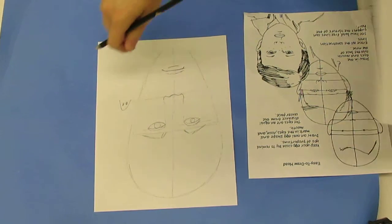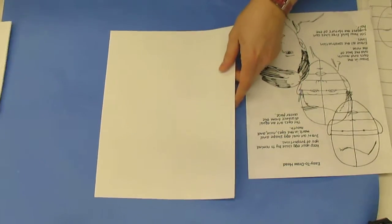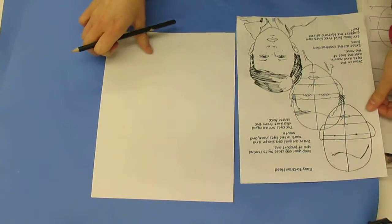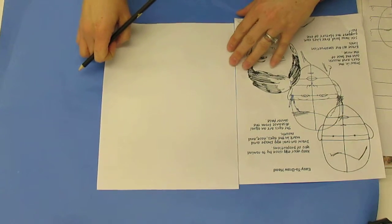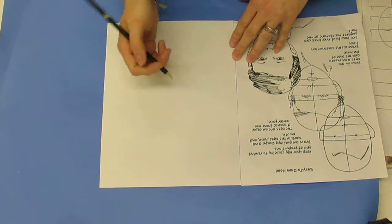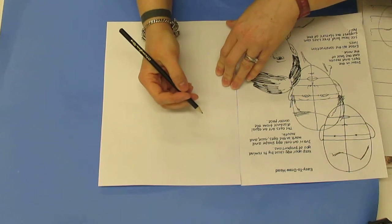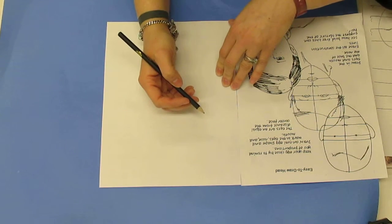When learning how to draw your portrait, the first thing you want to take into consideration is the actual shape of your head. When we were little, we sometimes drew our heads like circles or ovals, and although ovals are pretty close, your head is actually egg-shaped.